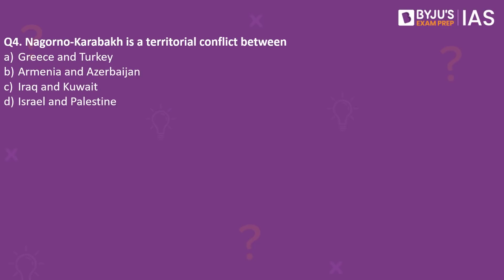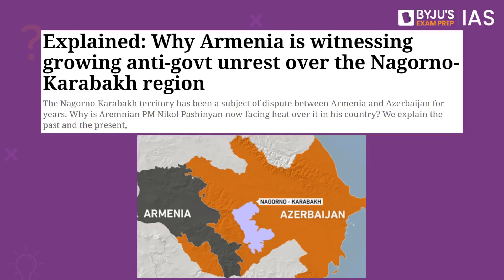The next practice question: Nagorno-Karabakh is a territorial conflict between — Greece and Turkey, Armenia and Azerbaijan, Iraq and Kuwait, or Israel and Palestine? The answer is Armenia and Azerbaijan. This article on the Indian Express makes a reference to the Nagorno-Karabakh region. This region has been a subject of dispute between Armenia and Azerbaijan for a number of years. International law considers this region belongs to Azerbaijan, but the majority of people in the region are Armenians who feel they should be assimilated with Armenia rather than recognized with Azerbaijan.